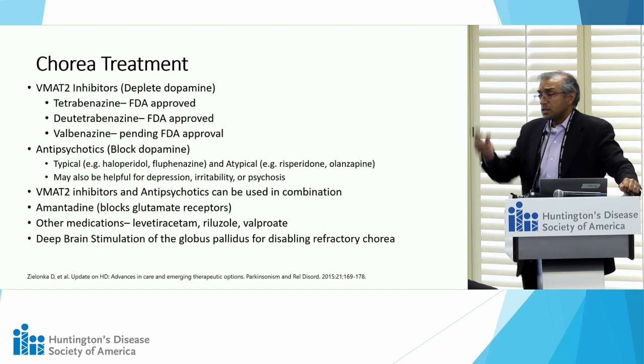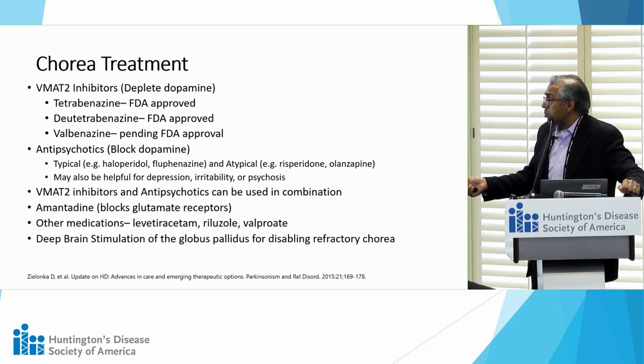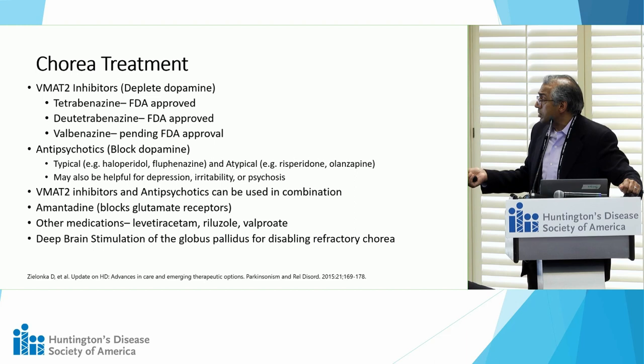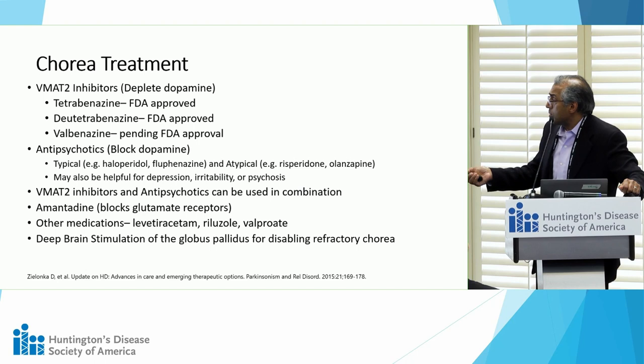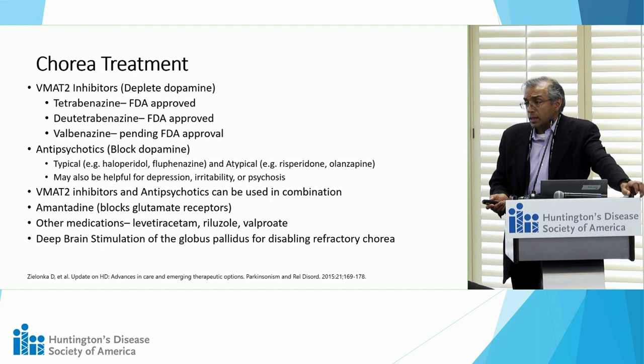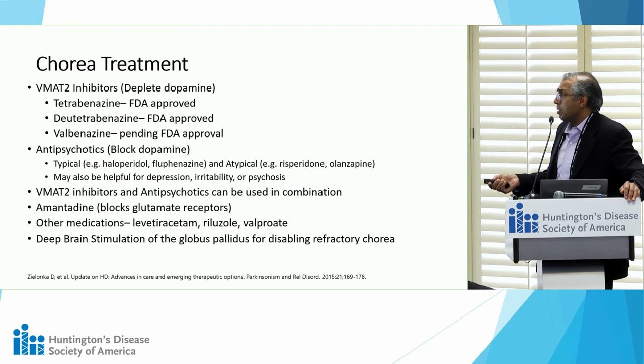We often use medicines that block dopamine — antipsychotic medications — of two main types. Typical antipsychotics have stronger blockade with more side effects such as sleepiness, including haloperidol and fluphenazine. Atypical antipsychotics block dopamine and serotonin receptors, such as risperidone and olanzapine. These can help chorea and also be helpful for mood, especially irritability and sometimes depression or psychosis. For really severe chorea, we'll often use a combination to suppress it further.